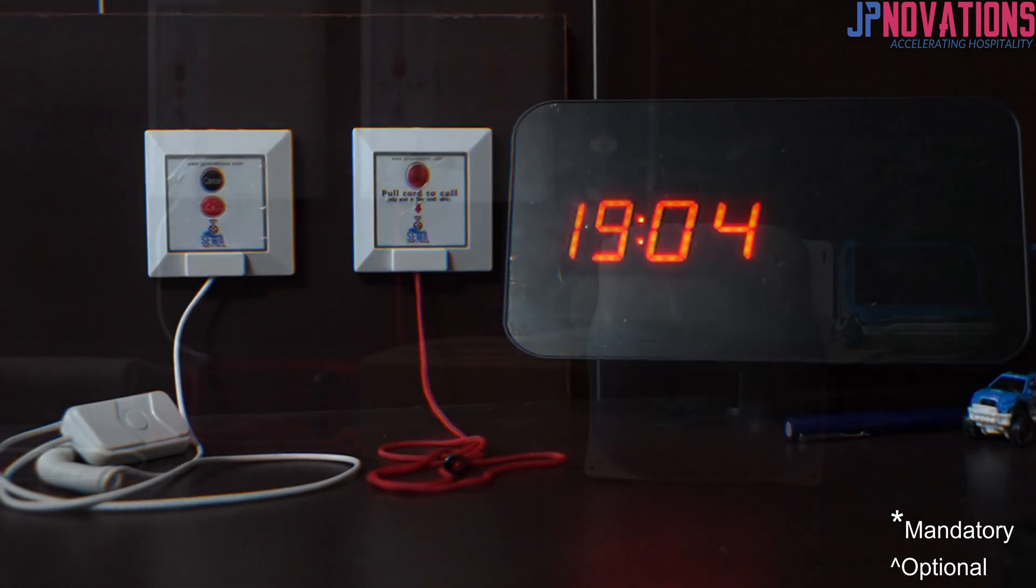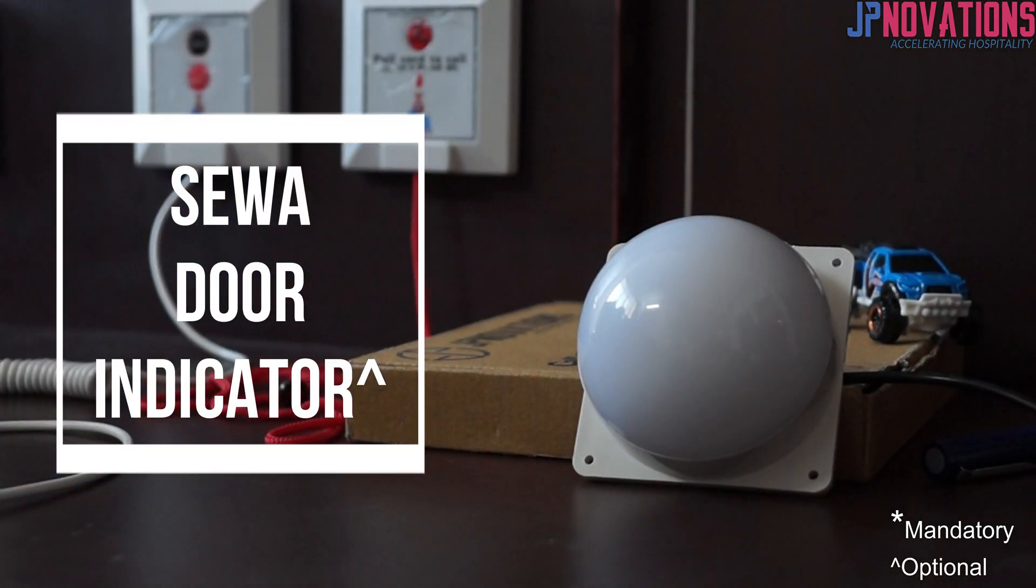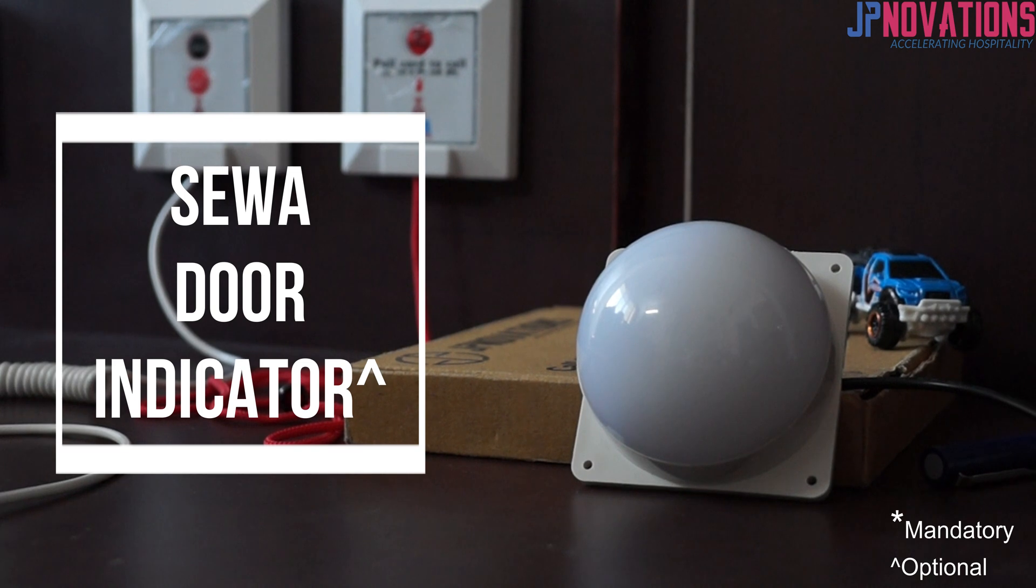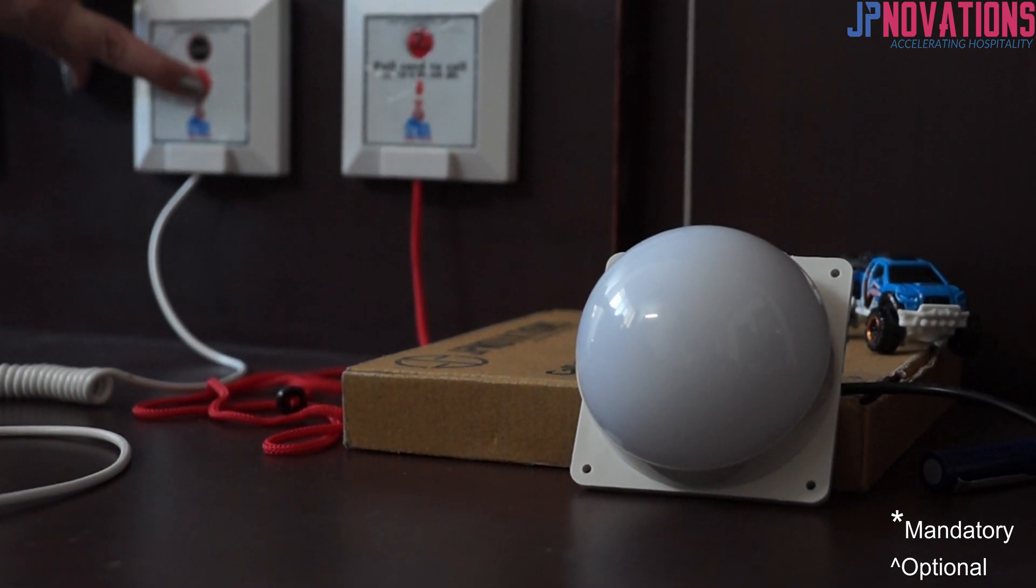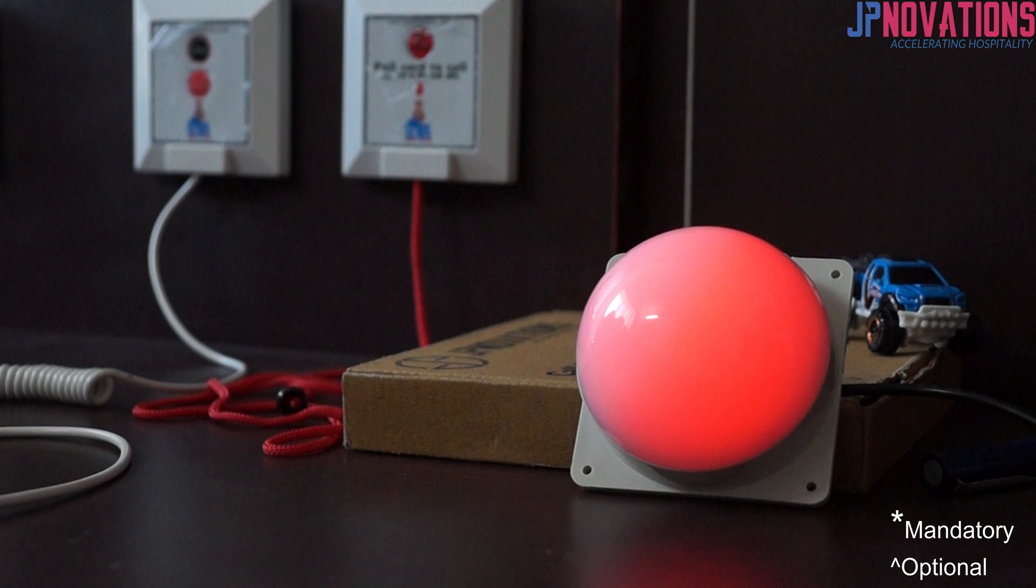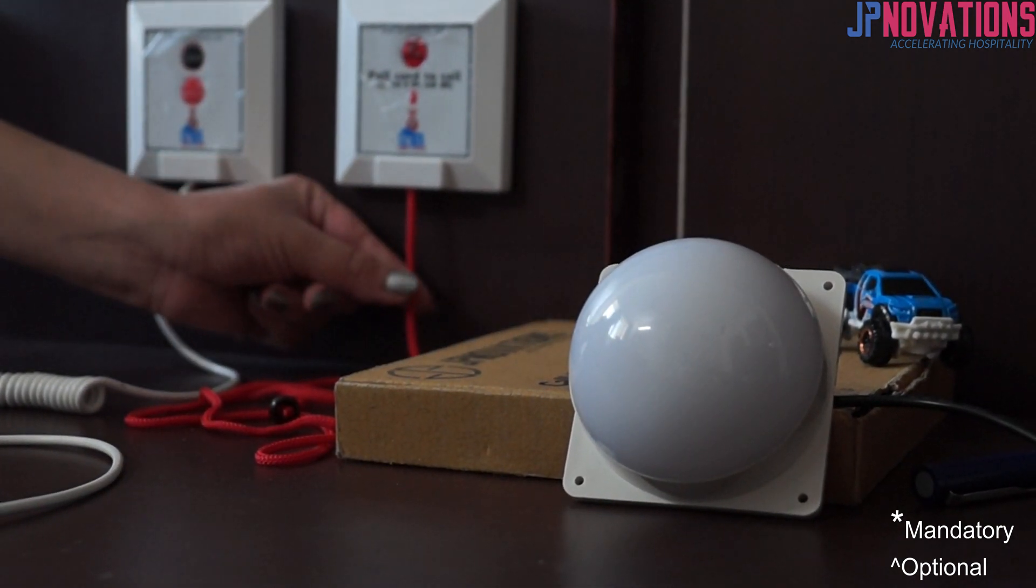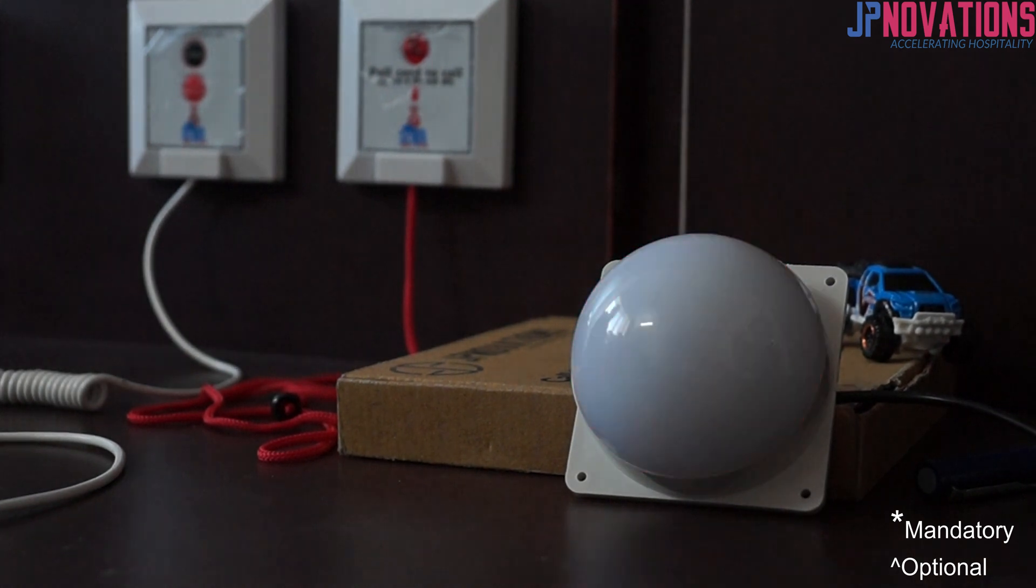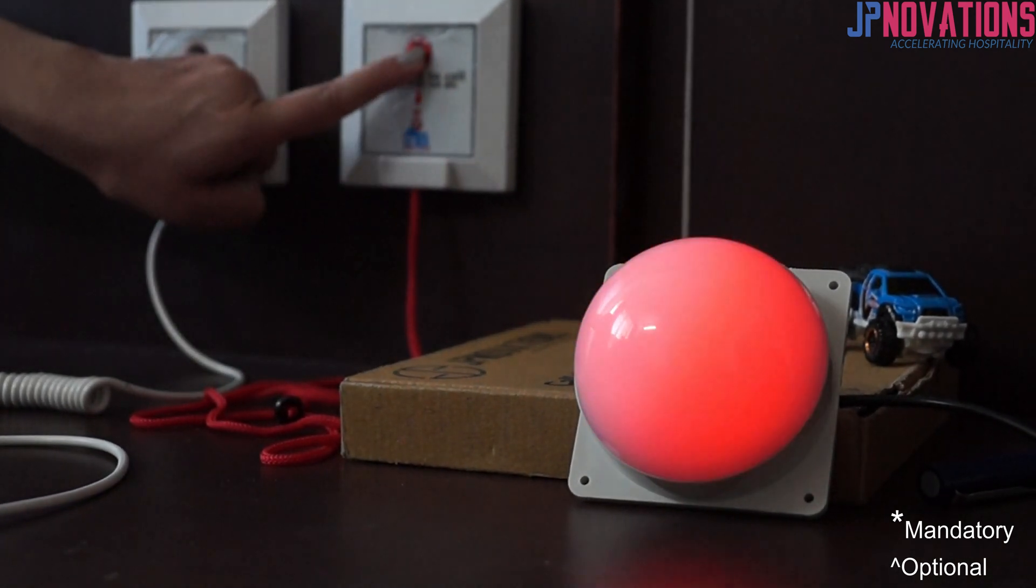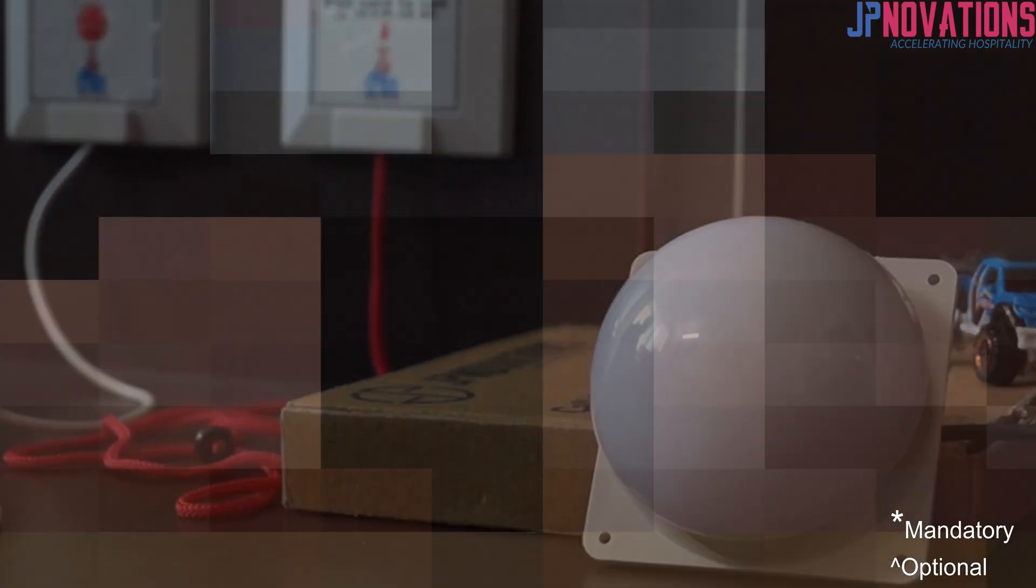This is a door indicator which glows when call button from respective room is pressed, and on attending the call light goes off. It is installed outside the room which helps in knowing that there is a pending call when staff is passing by the room. It helps in saving time of the staff.